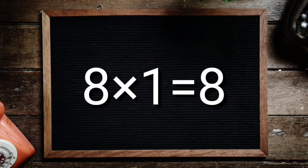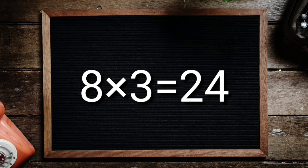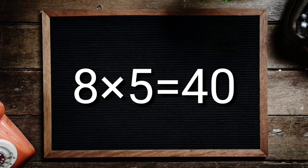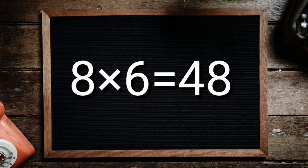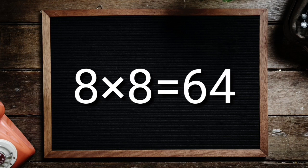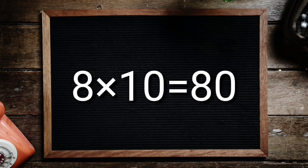Table of 8. 8 1's are 8, 8 2's are 16, 8 3's are 24, 8 4's are 32, 8 5's are 40, 8 6's are 48, 8 7's are 56, 8 8's are 64, 8 9's are 72, 8 10's are 80.